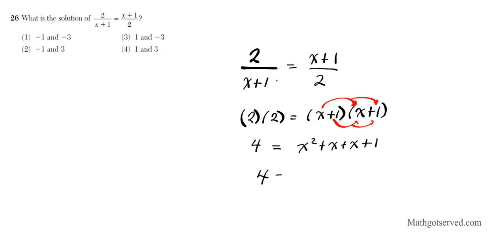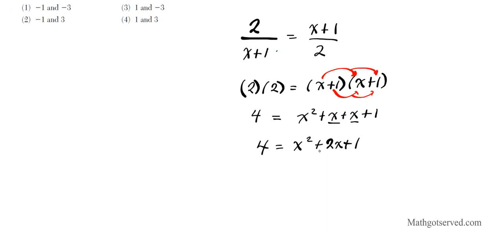Simplifying further, we have 4 equals x squared plus 2x plus 1, since the two middle terms are like terms and combine to 2x. This is a quadratic equation, so to put it in standard form I set it equal to 0 by subtracting 4 from both sides. Using the reflexive property of equality, I get x squared plus 2x minus 3 equals 0.